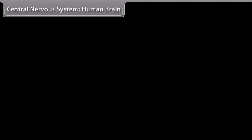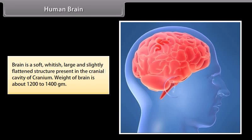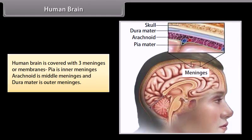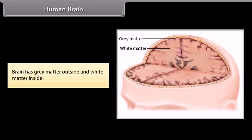The central nervous system consists of the brain and spinal cord. The brain is a soft, whitish, large, and slightly flattened structure present in the cranial cavity, weighing about 1200 to 1400 grams. The human brain is covered with three meninges or membranes: the pia mater (inner), the arachnoid (middle), and the dura mater (outer). The space between membranes is filled with cerebrospinal fluid. The brain has grey matter outside and white matter inside.